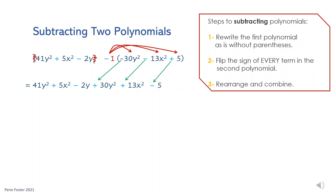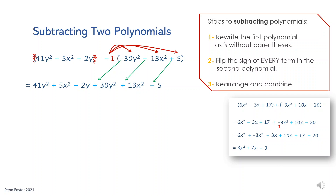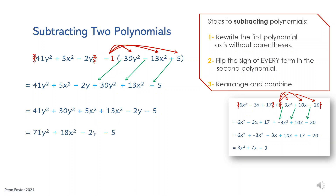You may ask why no such step is performed when adding two polynomials. On the previous problem, the second polynomial was multiplied times positive 1. Distributing positive 1 over each term does not have any effect on the sign or the value of coefficients — therefore, scratching out all parentheses was legitimate. Now group like terms, combine like terms in the first two groups, and bring down the rest as is. The final answer is 71y squared plus 18x squared minus 2y minus 5.